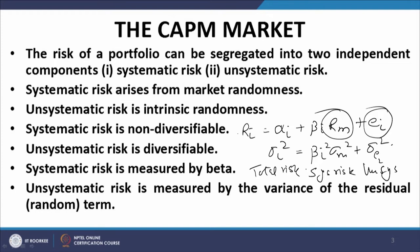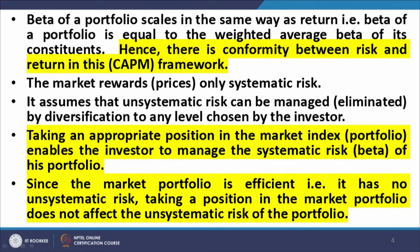Unsystematic risk is measured by the variance of the residual term. In the context of a portfolio, the unsystematic risk is measured as the summation of x_i squared * sigma(e_i) squared over all the securities constituting the portfolio. Beta of a portfolio scales in the same way as return — the beta of a portfolio is equal to the weighted average beta of the constituent securities, just like expected return of a portfolio equals the weighted average expected return. This is one of the very important outcomes of the research of William Sharpe, built upon the mean-variance portfolio optimization model propounded by Markowitz.